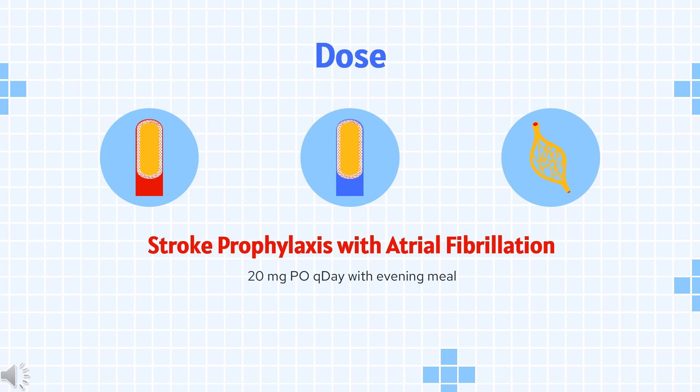Deep vein thrombosis prophylaxis for hip or knee replacement surgery: Indicated for prophylaxis of DVT which may lead to pulmonary embolism (PE) in patients undergoing knee or hip replacement surgery. Start 6–10 hours after surgery once hemostasis has been established. For CRCL ≥15 mL/min, knee replacement: 10 mg orally once daily for 12 days. For CRCL ≥15 mL/min, hip replacement: 10 mg orally once daily for 35 days. For CRCL <15 mL/min, avoid use.